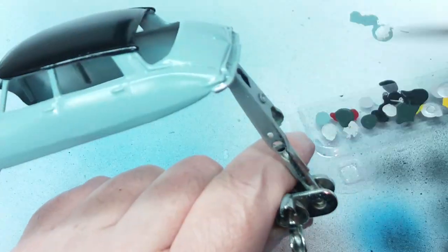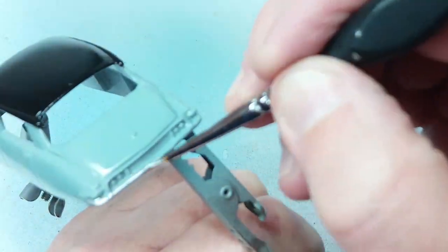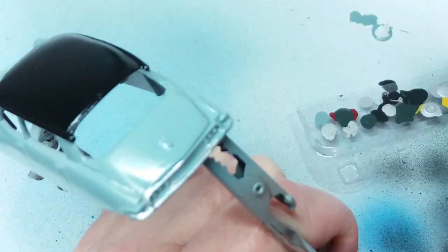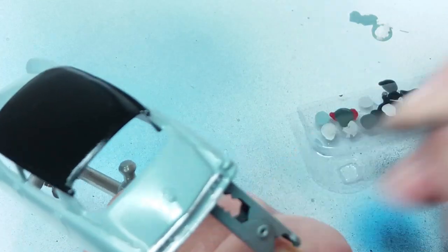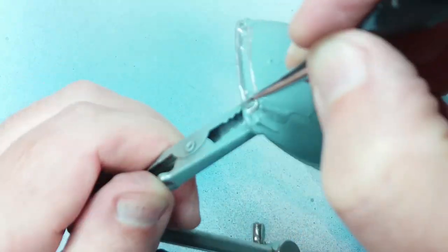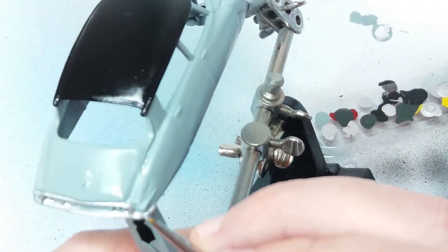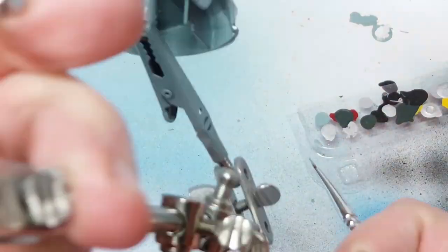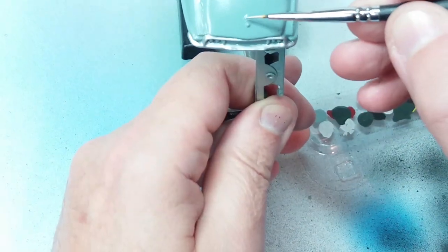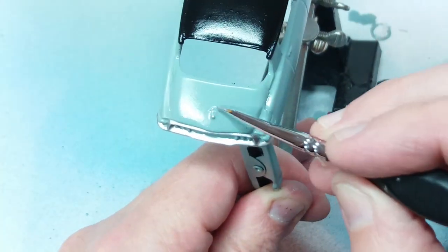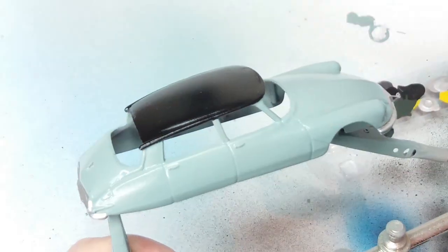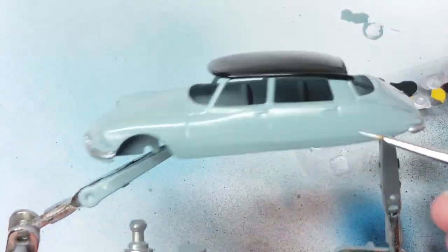Now on the rear of the car I'm just going to paint the bumper silver and I'll also paint in the Citroen logo and the door handles and I'll also put some red paint on the rear lights just to liven it up a bit. So there you go so that's the door handles done.